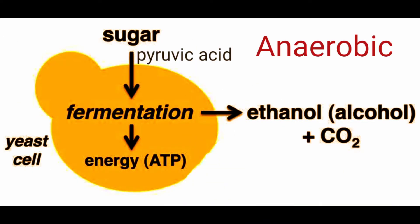Anaerobic respiration is the respiration which takes place in the absence of oxygen. During this respiration, glucose is broken down into ethyl alcohol and carbon dioxide with the release of a very small amount of energy. In anaerobic respiration, one molecule of glucose produces only 2 ATP of energy.